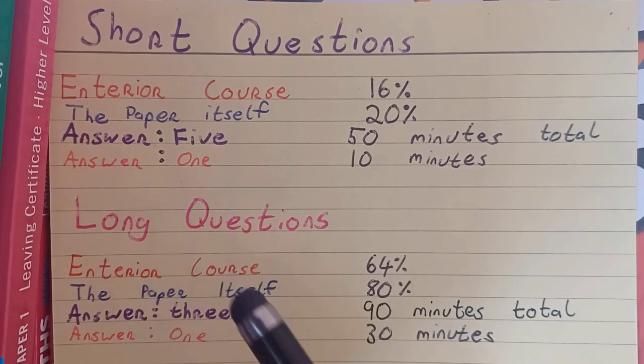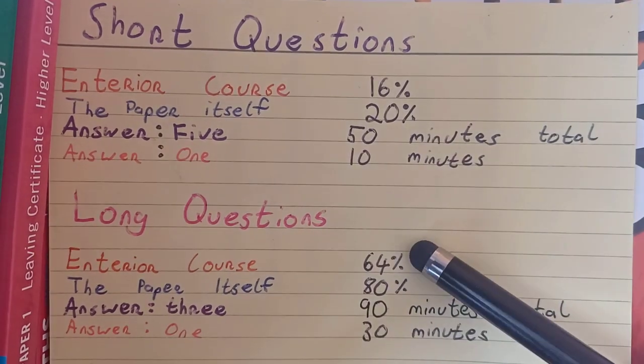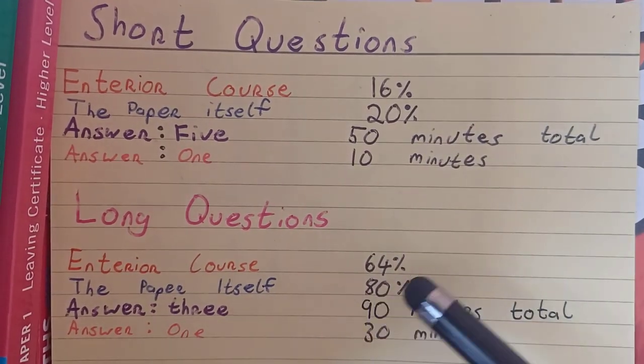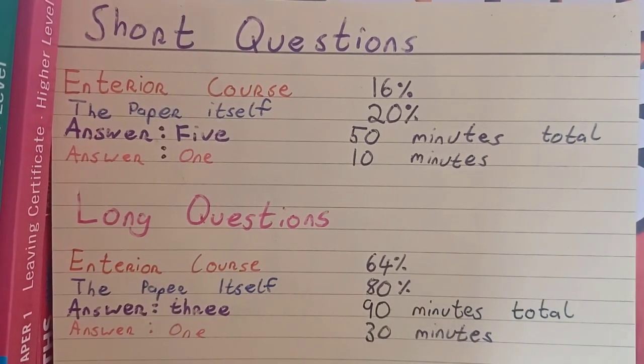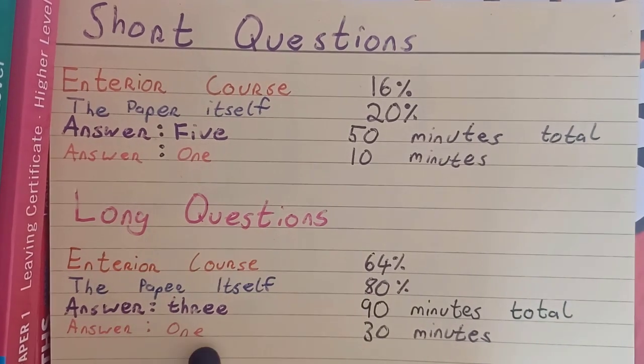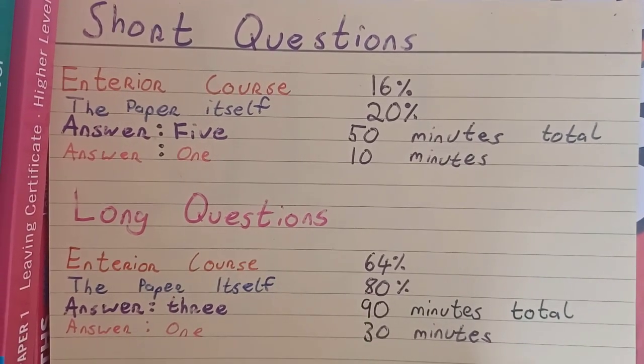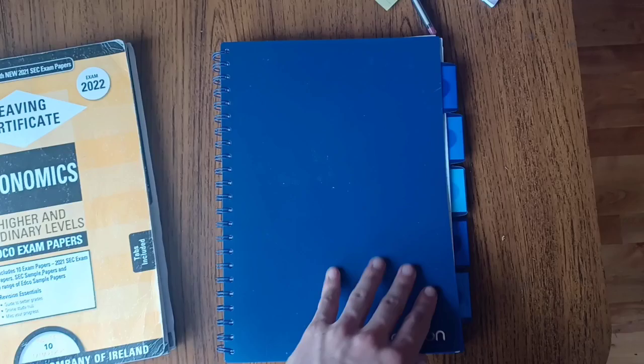Out of the entire course, the long questions are worth 64%. In the paper itself, it's 80%. You should answer three for 90 minutes total. So that's one for every 30 minutes. So it's time to break out the notes.